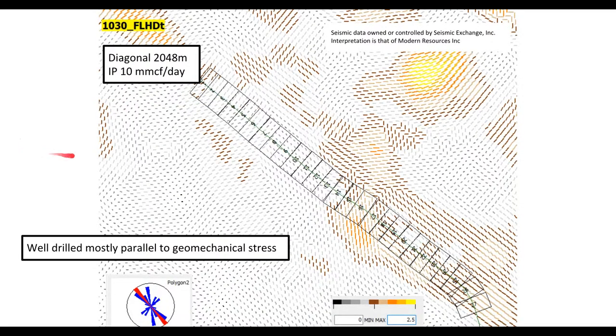If we look at the diagonal well, all I have are the stress vectors at the toe of the well, we're more or less perpendicular, but by the time that we go along for half the well, you can see that we're parallel, there's large many stages that are drilled parallel to the fractures.